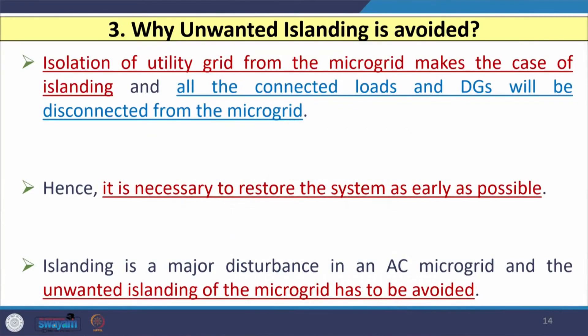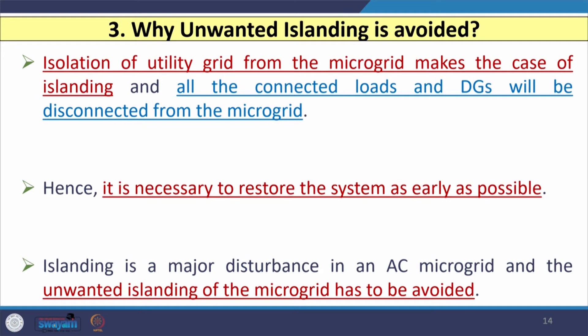Isolation of the utility grid from the microgrid causes islanding, disconnecting all connected loads and DGs. It is necessary to restore the system as early as possible. Unwanted islanding is a major disturbance for the AC microgrid and should be avoided as far as possible.